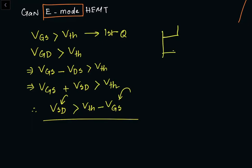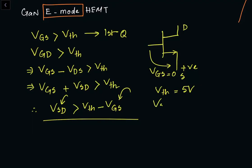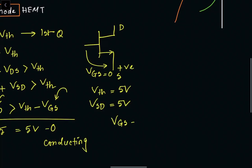For example, consider a GaN HEMT with no gate bias applied, so VGS = 0, with positive bias on the source side and negative bias on the drain side — a positive VSD. Say the threshold voltage is 5 V. If you apply VSD = 5 V, then 5 V = 5 V − 0 V, so it will start conducting. What if you also apply a positive gate voltage? If VGS = 2 V, you only need VSD = 5 V − 2 V = 3 V, so the device starts conducting at just 3 V.